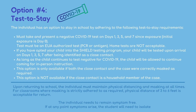Option four: the test to stay option. If you choose this option, your child will not need to quarantine pending negative COVID-19 test results on days one, three, five, and seven since first exposure. The test must be a laboratory-based PCR COVID-19 test. If you have opted your child into the SHIELD testing program, your child will be tested on arrival on days one, three, five, and seven at school after being identified as a close contact. As long as your child continues to test negative for COVID-19, they will be allowed to continue to come in person for instruction. Please note this option is only available if both the close contact and the COVID-19 case were correctly masked as required, and this option is not available if the close contact is a household member of the case.